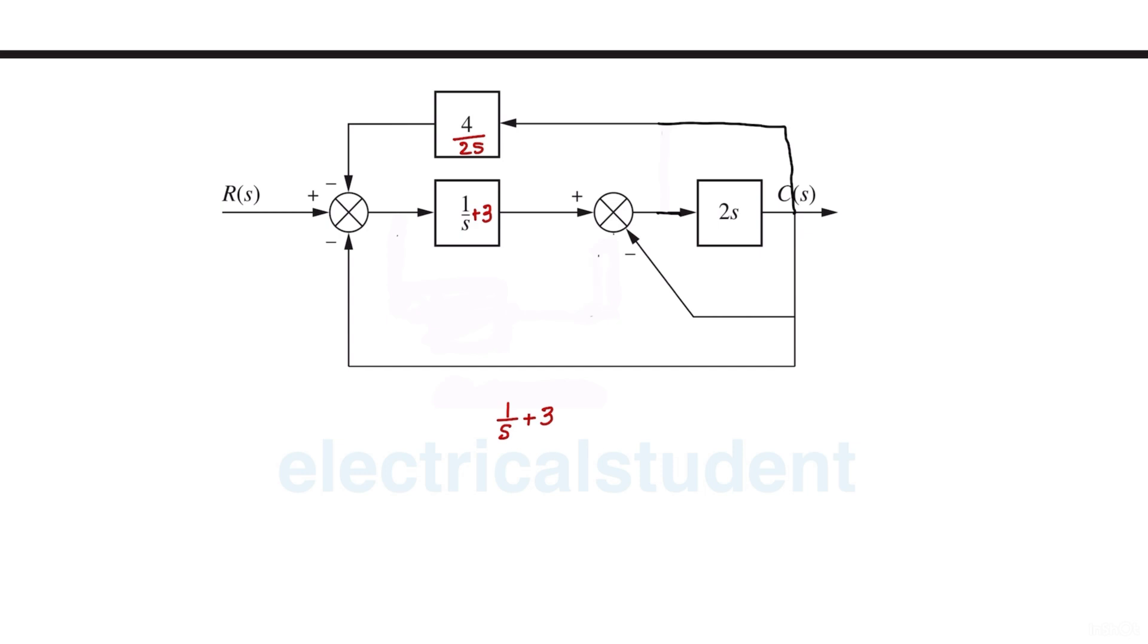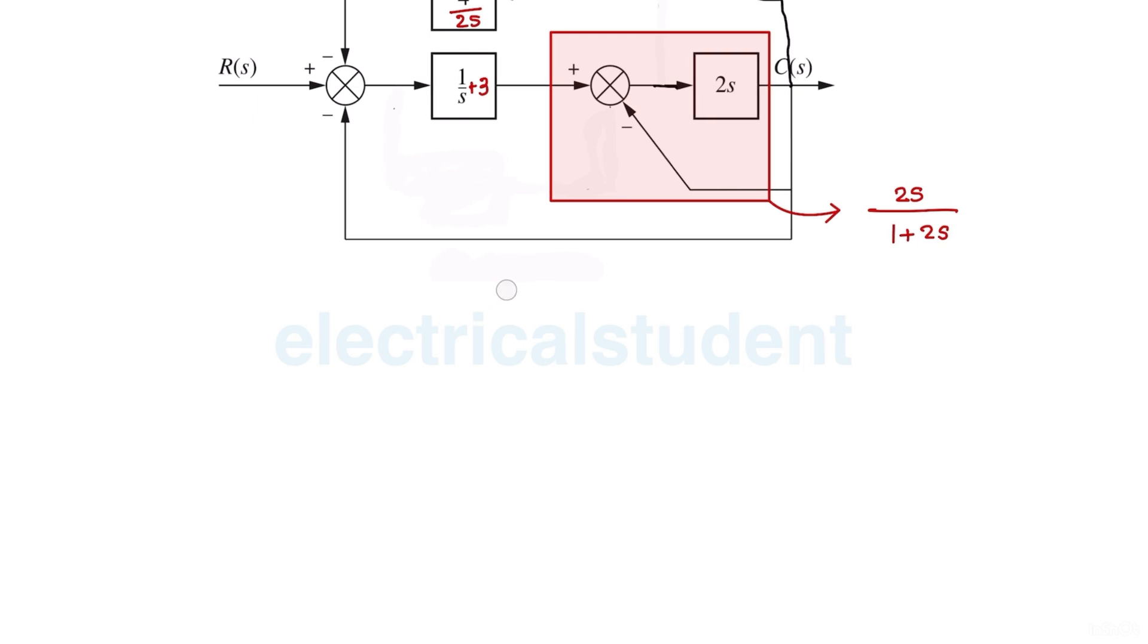So in this case, now we can find one more feedback loop here. See, I will highlight the feedback loop here now. So this is basically one more feedback loop. I will highlight in a better way. So this path, this loop I am circling basically.